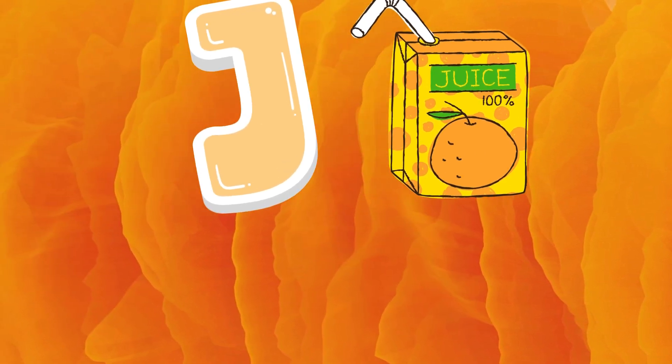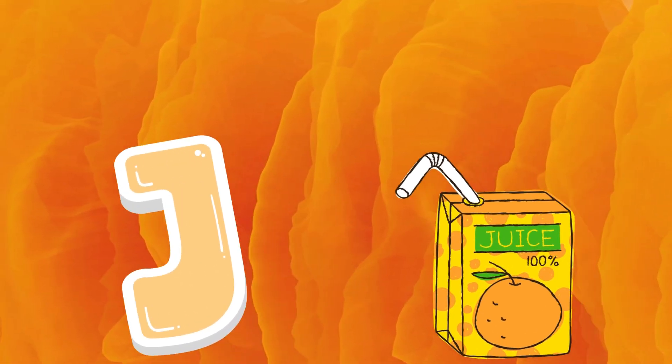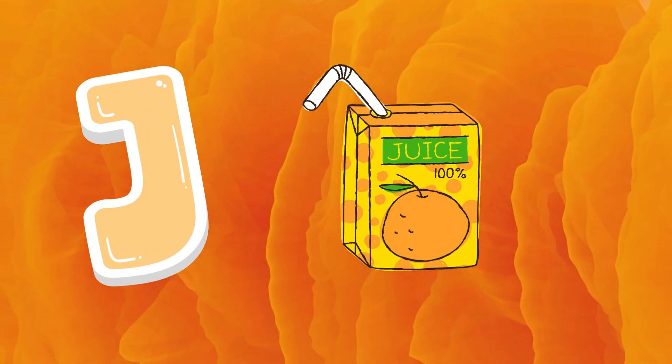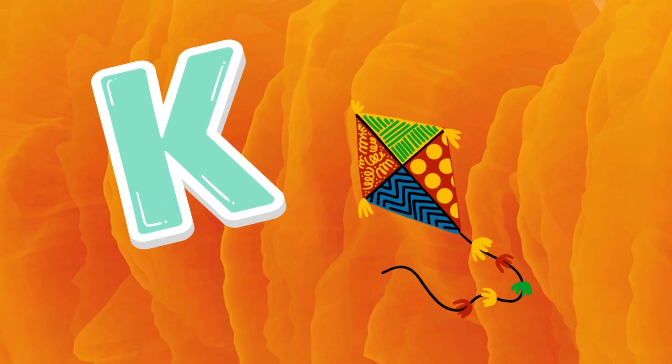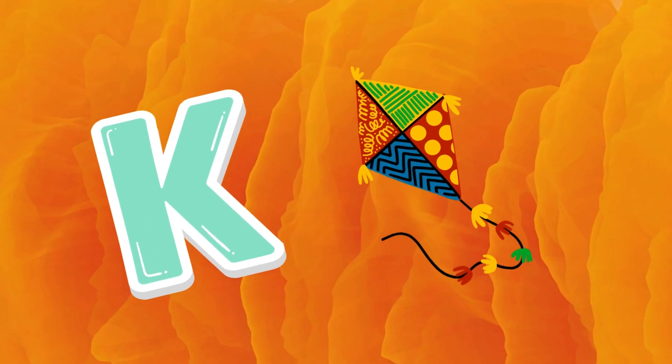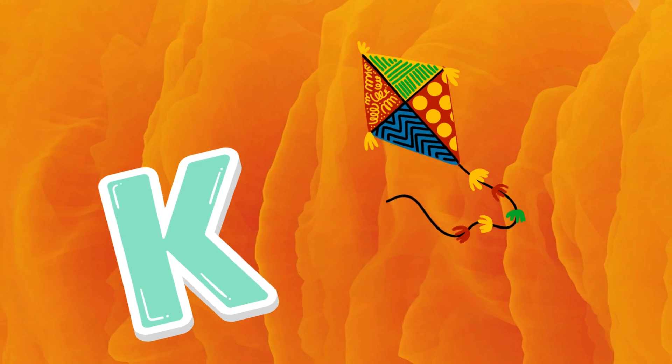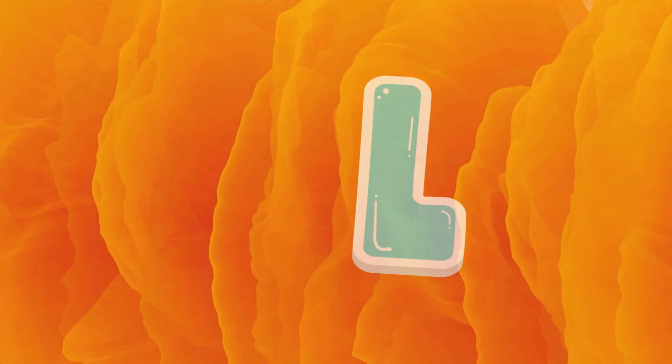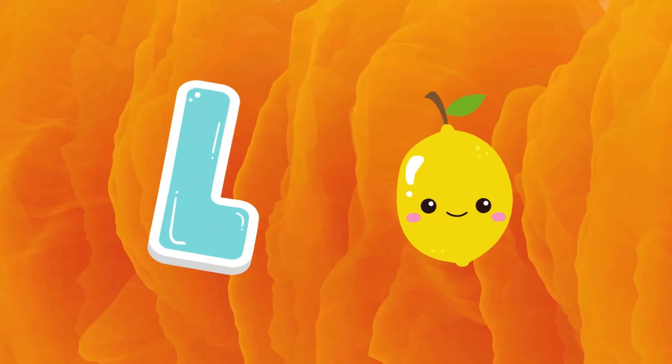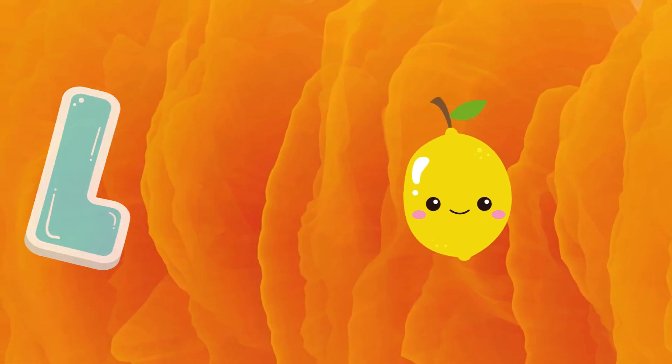J is for juice, j-j-juice. K is for kite, k-k-kite. L is for lemon, l-l-lemon.